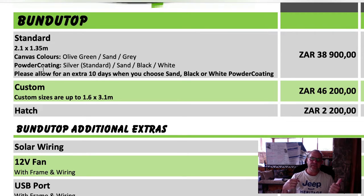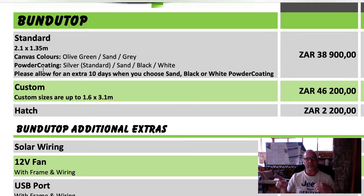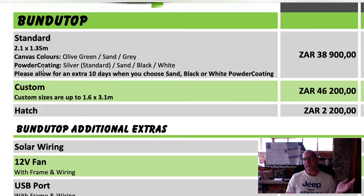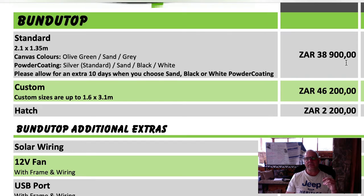The powder coating on the outside of the aluminum can also be chosen. It's either silver - the standard Bundutop you see driving around is powder coated silver, not bare aluminum - or you can choose powder coated sand, which fits the brown Hilux and Land Cruiser colors. You can also pick black or white. Note that non-standard color coatings need a bit of extra lead time as they need to get the configuration sorted.